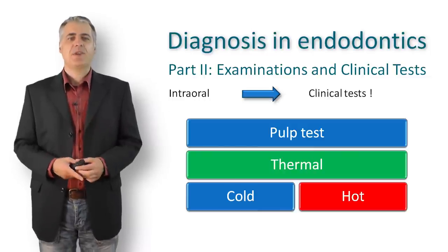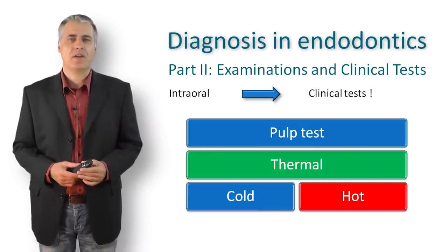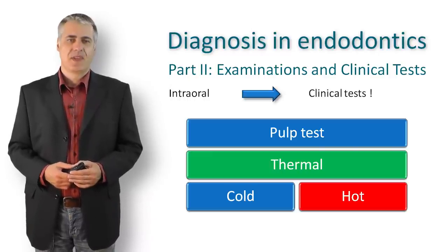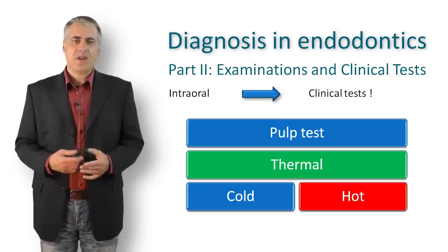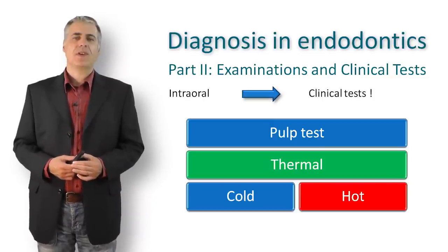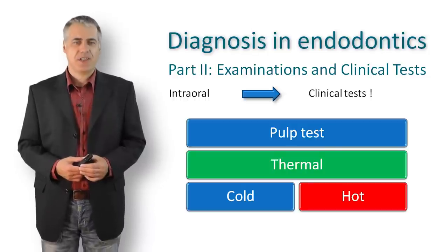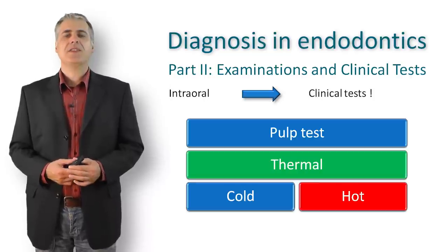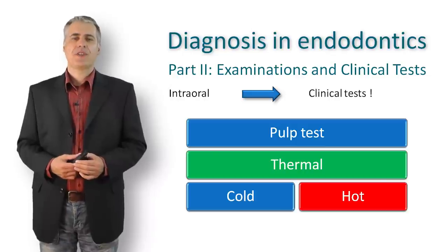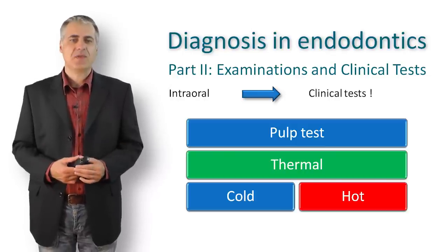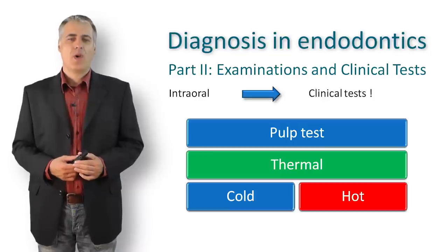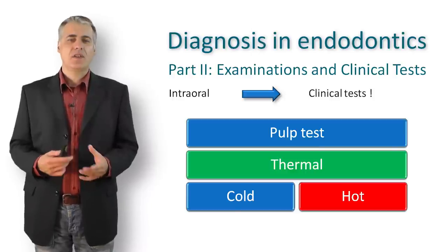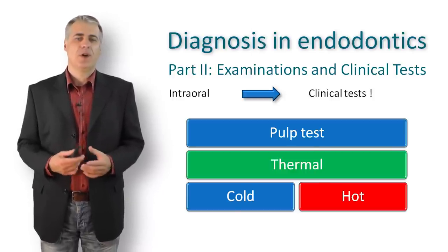The heat test can be performed when the patient reports pain on hot liquids or food but is not able to identify the tooth. Several methods are possible — one is to use hot gutta-percha mounted on a heat plugger, which is activated briefly so the gutta-percha melts slightly and is applied to each tooth until the offending tooth is identified. Isolating teeth with rubber dam is useful when using warm or heated water for heat testing, delivering the water with a syringe onto the isolated tooth to observe the response.